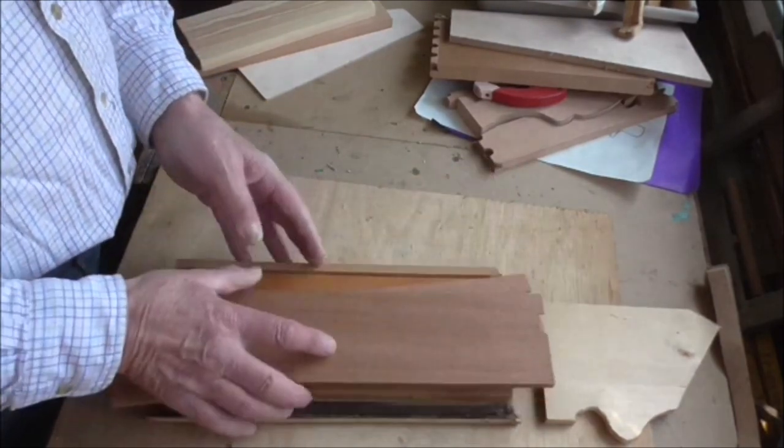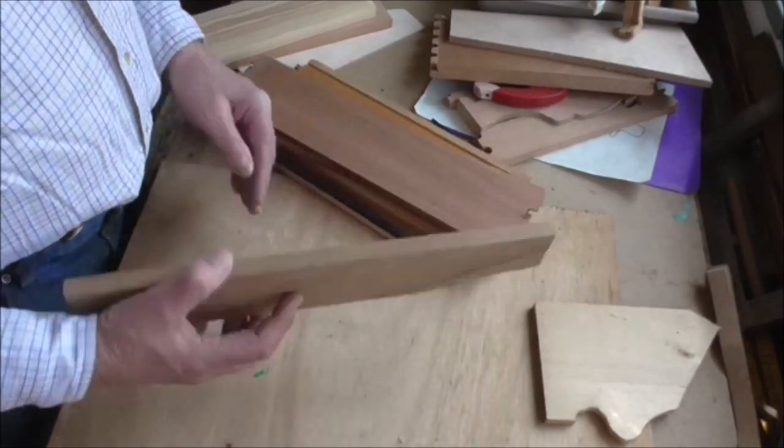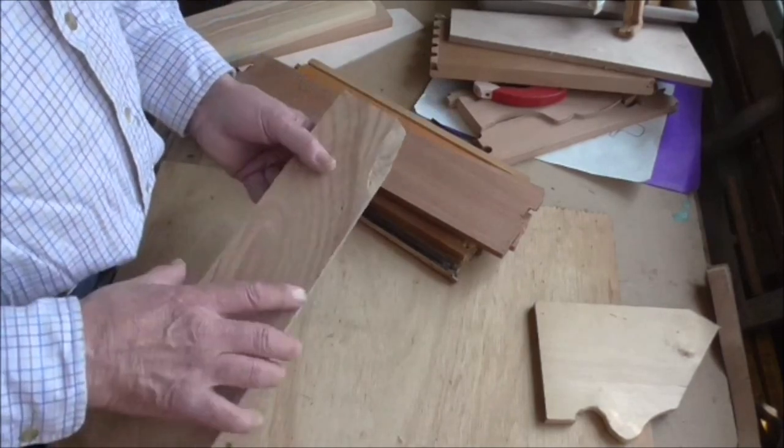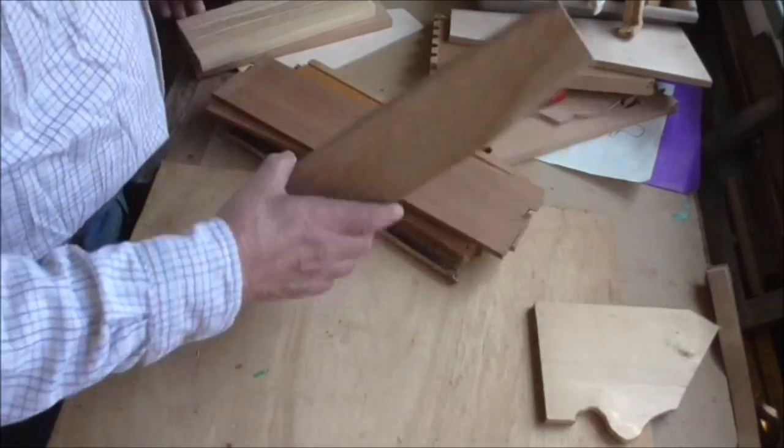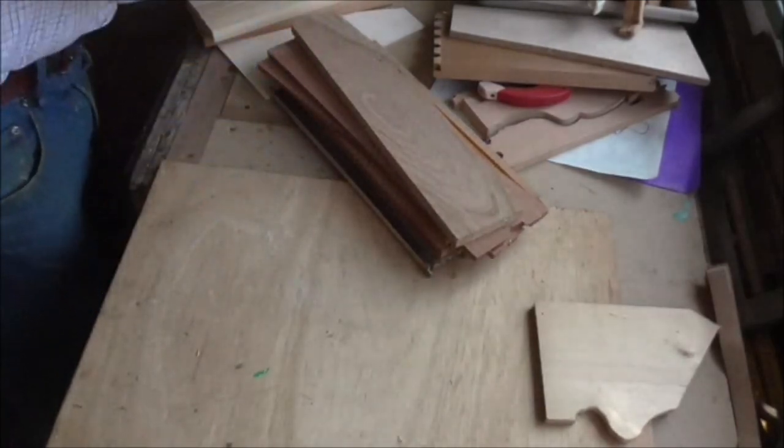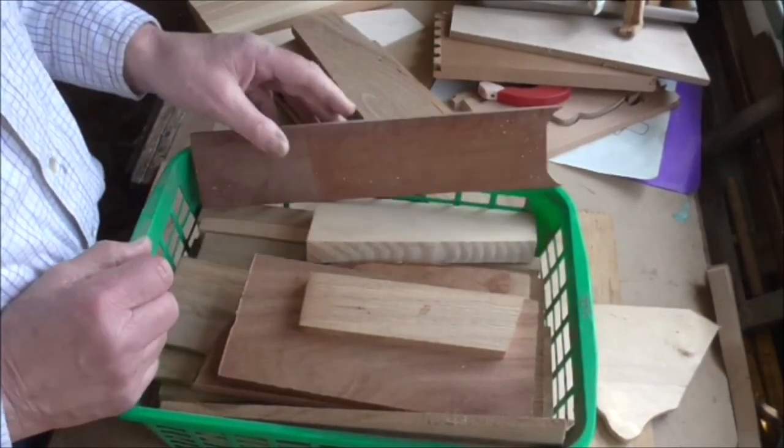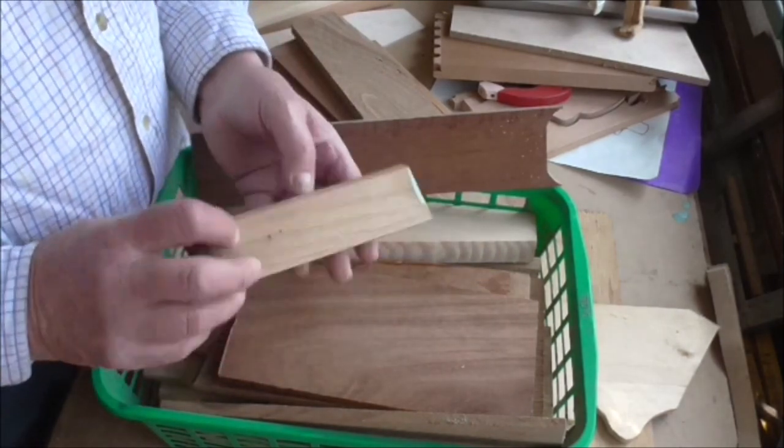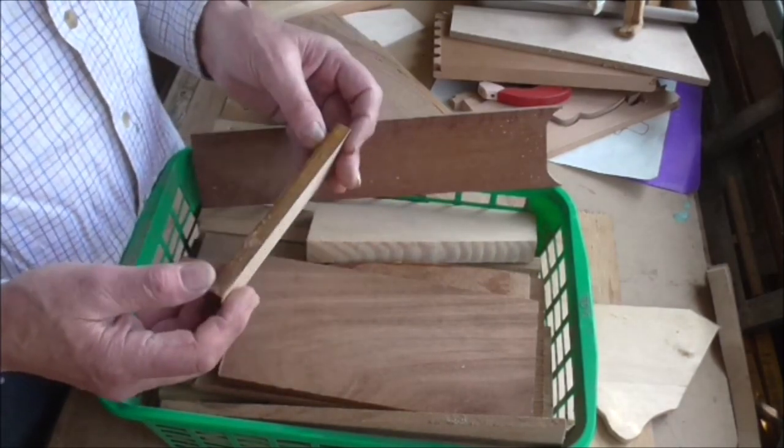We've got a bit of elm there which came from a log which I cut up. Again it's got a few wormholes in, but elm's pretty good outdoors. What I do, I always keep a box or tray of offcuts. That little bit there, that's a little bit of oak. Most people would just throw it away, but that came from an item of furniture.